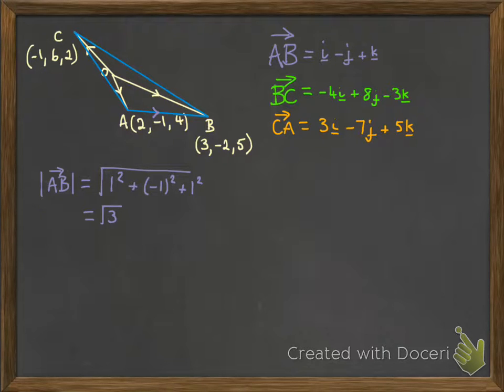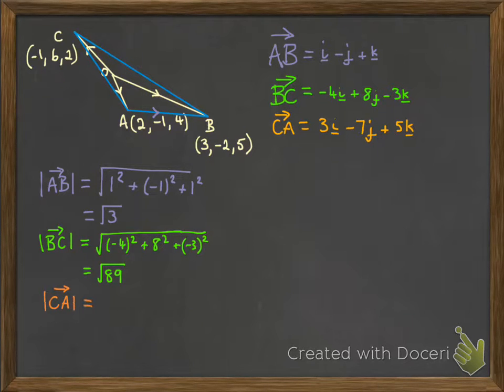I'm going to do the same on each of the other ones. And I just spotted that I wrote down 5k at the beginning instead of 2k at the end of that orange vector, so I've just changed that one for you. So we get this root 3, root 89, and root 62 for each of the lengths of the sides of the triangle. Add them all together, and we will get the total perimeter.